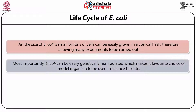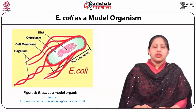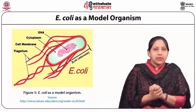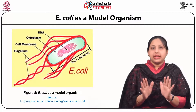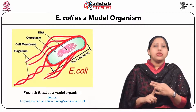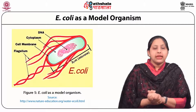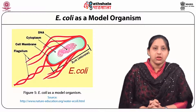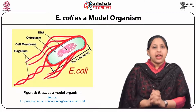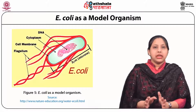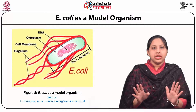Most importantly, E. coli can be easily genetically manipulated, making it a favourite model organism in science. In addition to thriving in a stable warm nutrient-rich gut environment, E. coli can also thrive in harsh aerobic and colder environments outside. This ability to survive in diverse conditions, and the fact that culture media with only minute nutrients can spur it to grow and divide, means it can be grown easily in the laboratory.